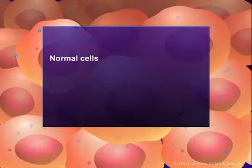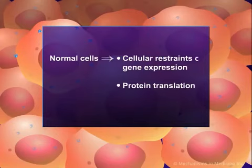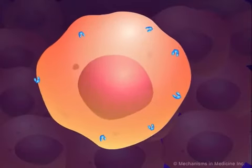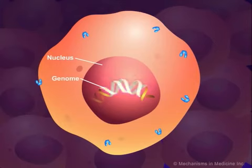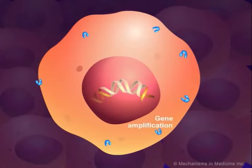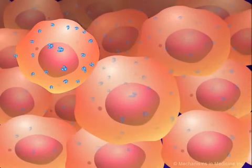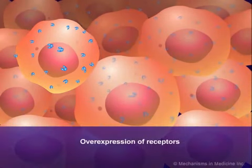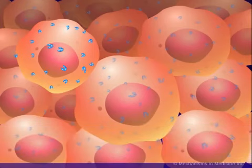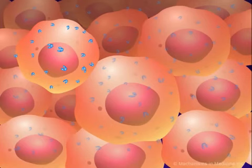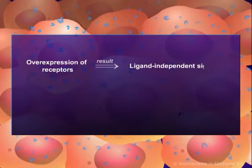In normal cells, the production of cell surface receptors is limited by cellular restraints on gene expression and protein translation. In tumor cells, however, mutations in the genes encoding for the receptors disrupts this finely tuned regulation, and too many copies of the gene are produced — a phenomenon called gene amplification. This, in turn, leads to excessive transcription and production of receptors. The end result is a higher-than-normal number of copies, known as overexpression of the receptor on the tumor cell surface, giving the tumor cell increased potential to be triggered into a growth phase. The more receptors expressed, the more binding sites are available for the ligands.